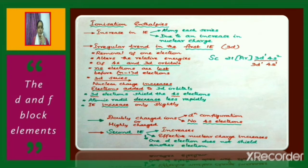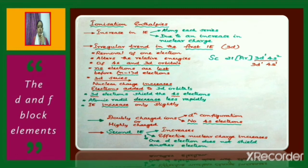An irregular trend is found in the first ionization enthalpies of the 3d elements. For example, consider scandium with atomic number 21, whose electronic configuration is [Ar] 3d¹ 4s². The first ionization enthalpy is the energy required to remove one valence electron from the 4s orbital, changing scandium's configuration to [Ar] 3d¹ 4s¹. This removal alters the relative energies of the 4s and 3d orbitals.